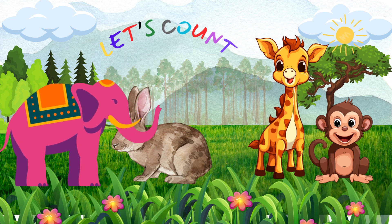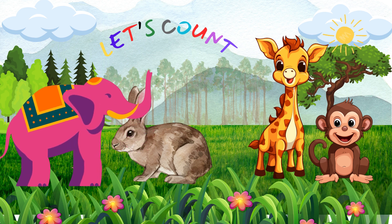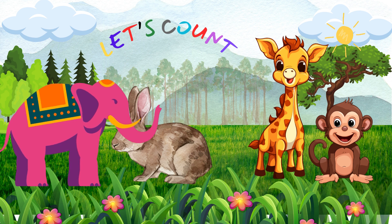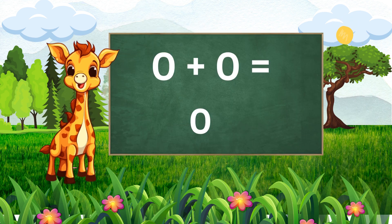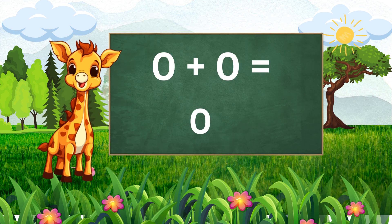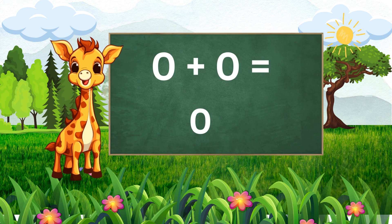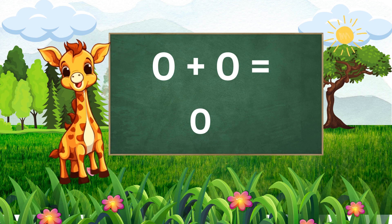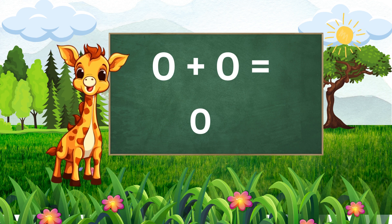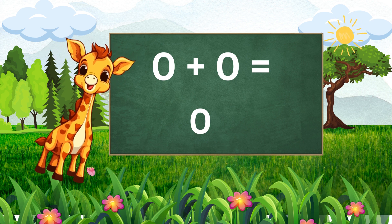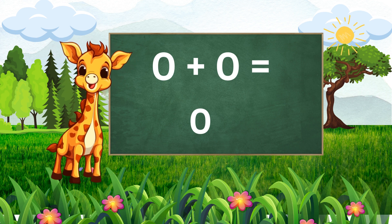Let us begin with the simplest of sums. What do we get when we add zero and zero? Zero. Splendid — zero plus zero equals zero.